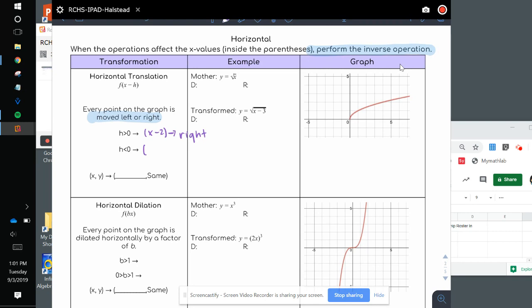If I have x plus 3, my h is actually negative 3, which would be x minus negative 3, and the graph moves to the left. To get the new x points, we do x minus h, and the y stays the same.